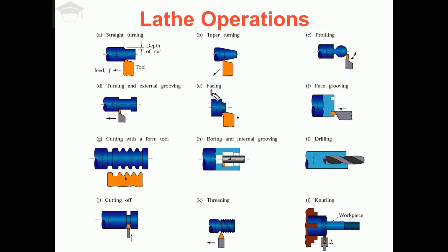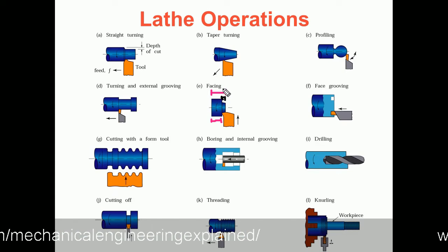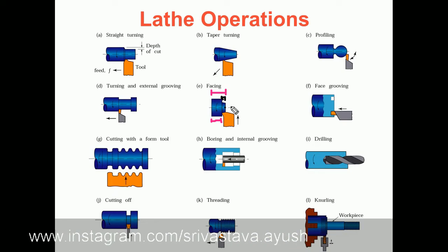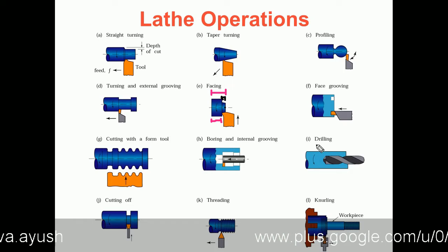Next comes the facing operation. In the facing operation we reduce the length of the workpiece. The original length of the workpiece was a certain amount, and the final length is reduced by removing some material from the end. We put the tool tip at the face and move it radially outwards to perform the facing operation.